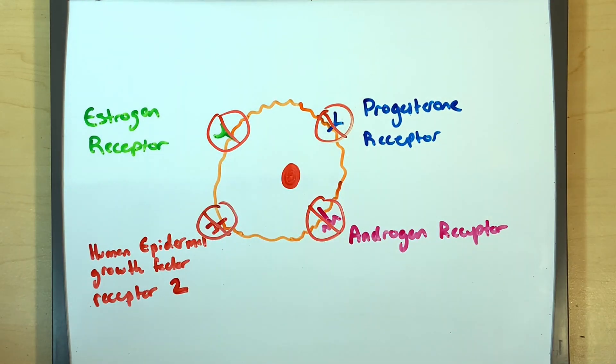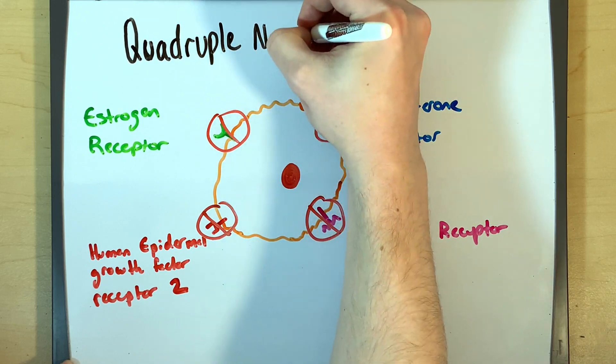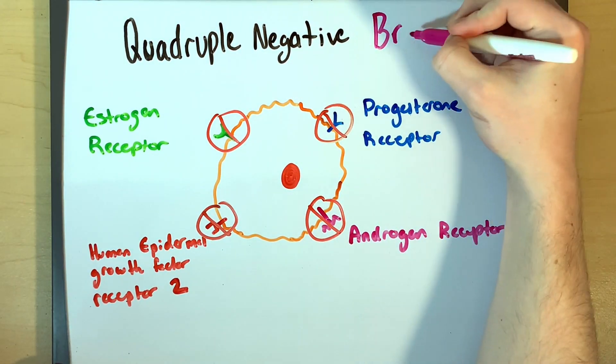Unfortunately, a new subtype of cancer characterized in the past 10 years is negative for all four of these receptors. This is known as quadruple negative breast cancer.